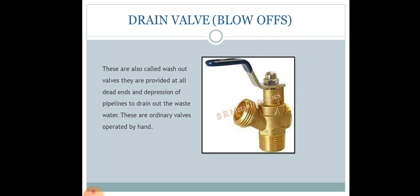The drain valve, also called blow-offs or washout valves, are provided at the dead ends and at depressions of pipelines mainly to drain out waste water. They are manually operated valves.